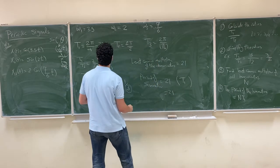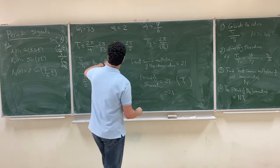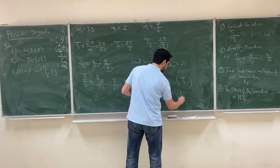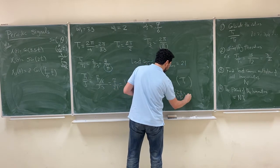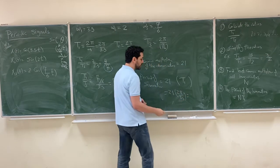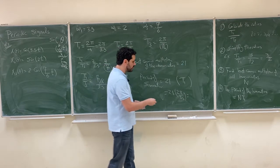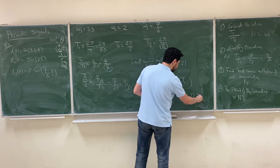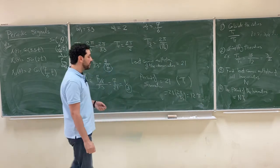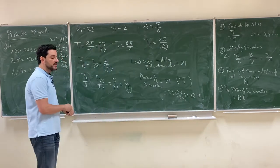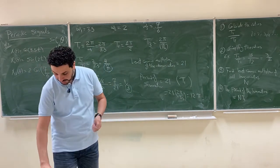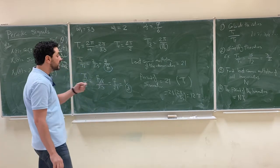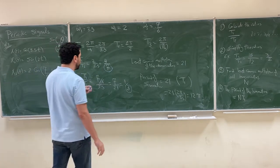So the period of the summation is 21 multiplied by 2π/3.5, which gives 6 × 2π = 12π. So the period of the summation is 12π seconds.